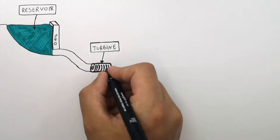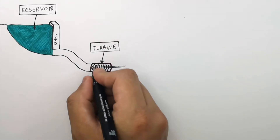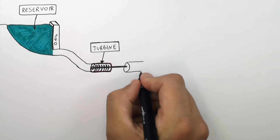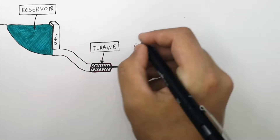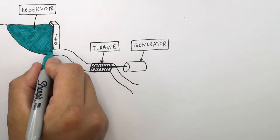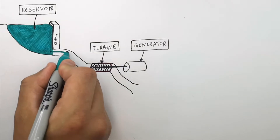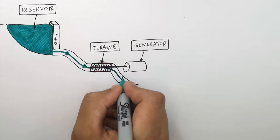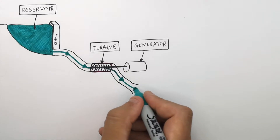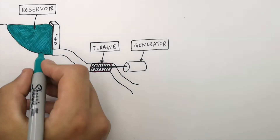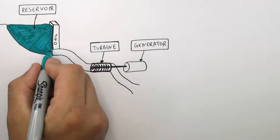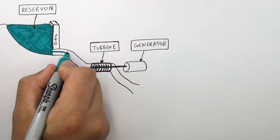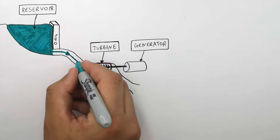The turbine is connected to a generator — a generator generates electric current. Water that is stored in the reservoir behind the dam is allowed to fall down through a turbine. Energy stored in the gravitational potential energy store of the water in the reservoir is then transferred to the water's kinetic energy store.